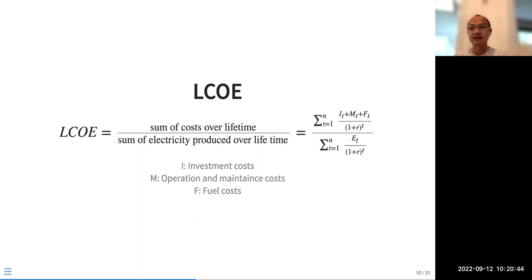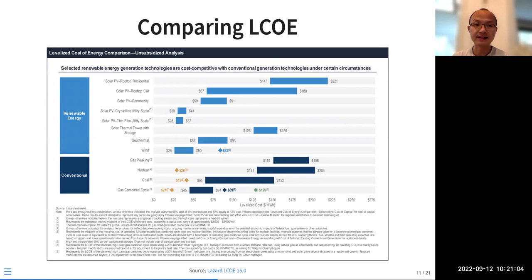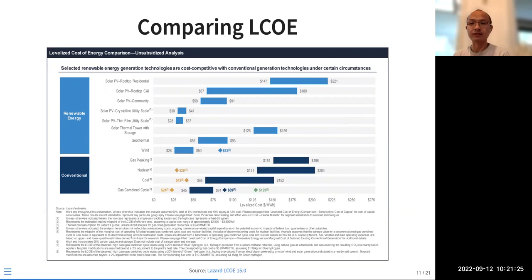For renewables, you don't have fuel costs and you have less operation and maintenance costs, though sometimes you have higher investment costs. When we talk about the cost of a technology, we must use levelized cost of electricity so we know we are comparing apples to apples. The good news is that the levelized cost of electricity for renewables — including solar, wind, and offshore wind — is declining very fast. In many places, it's already competitive with conventional technologies.